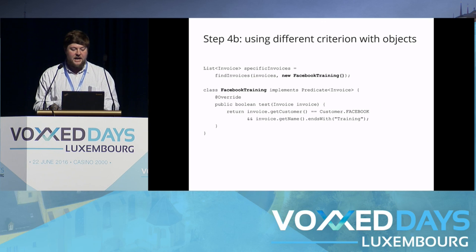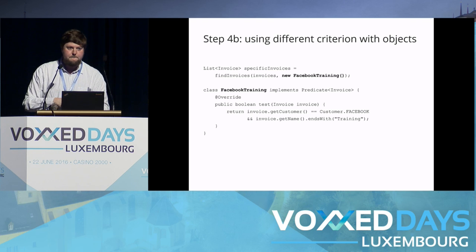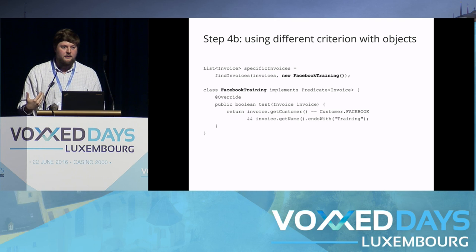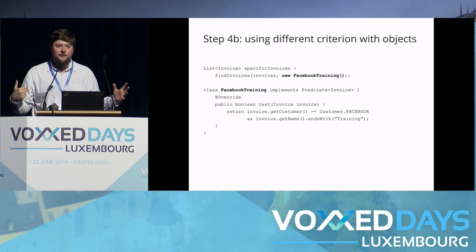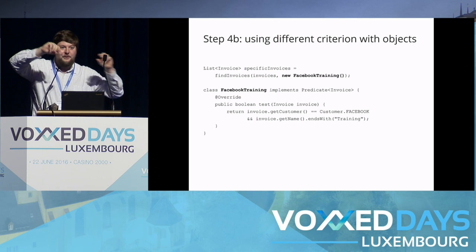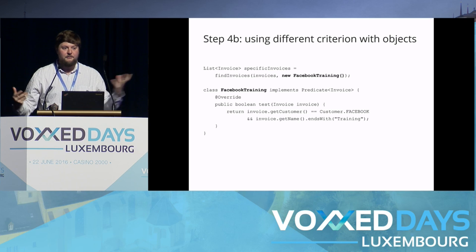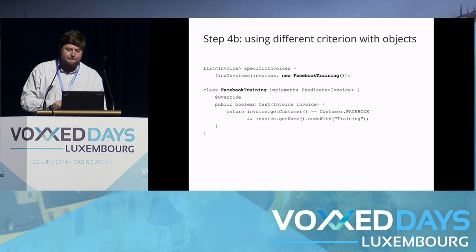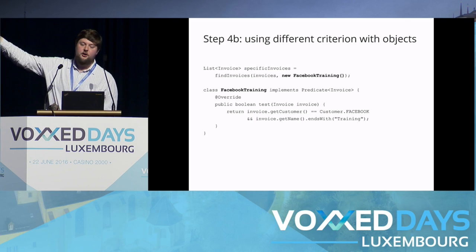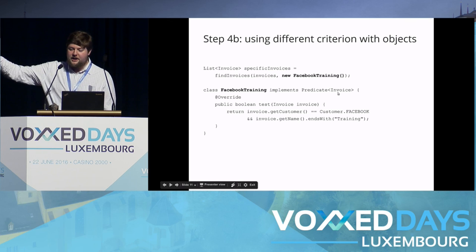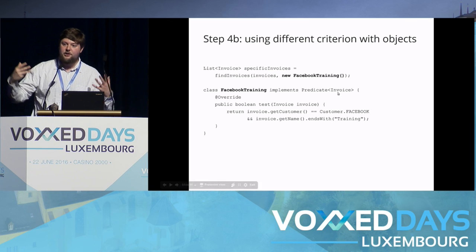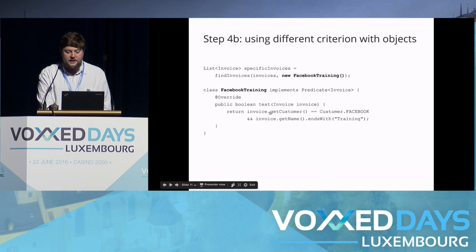Even before Java 8 came along, we could implement that behavior with a class — for example a predicate that says is the customer Facebook and is it training? But the reality is that even though that's a lot more flexible, it's very rare that people actually do this. You see all over applications this copy-and-paste boilerplate with a for loop and an if statement — so common that people often don't even recognise it as boilerplate. And if we rewrote it this way it would still be very boilerplate-y. We just want to say 'customer is Facebook and name ends with training', but we'd have to write 'class FacebookTraining implements Predicate' with all this unnecessary clutter. It still doesn't say what it does.